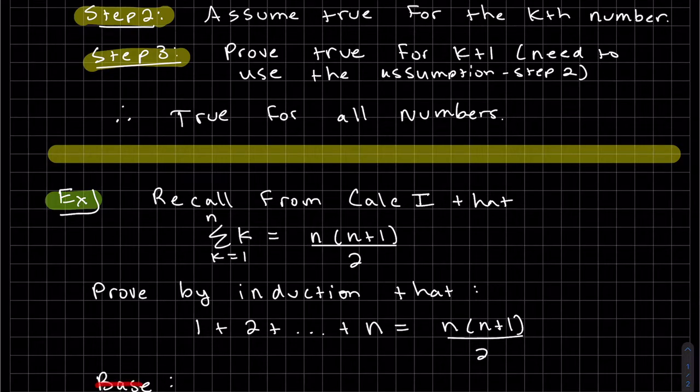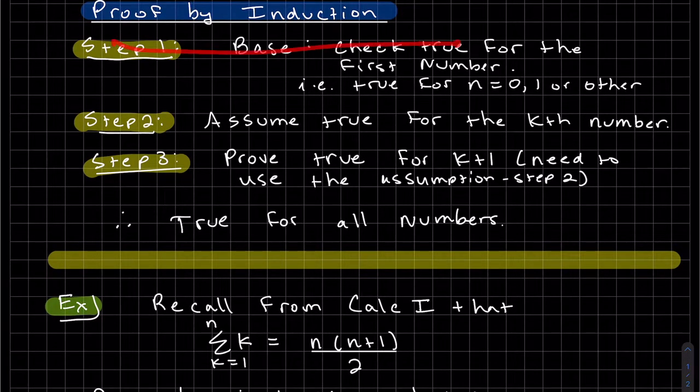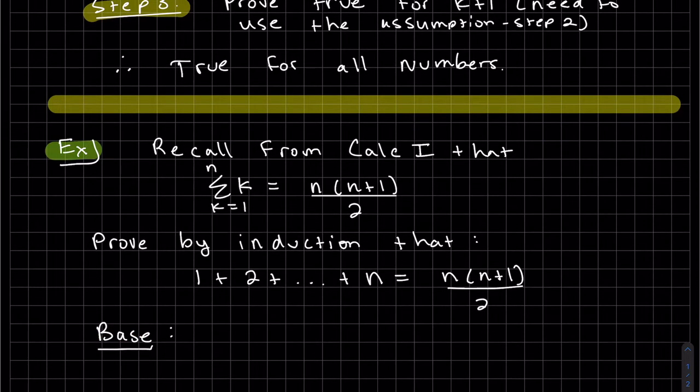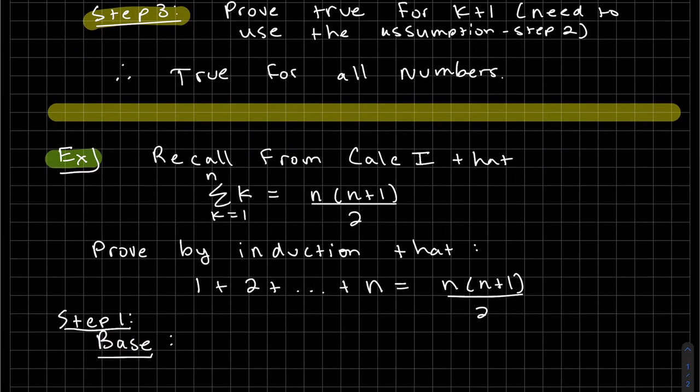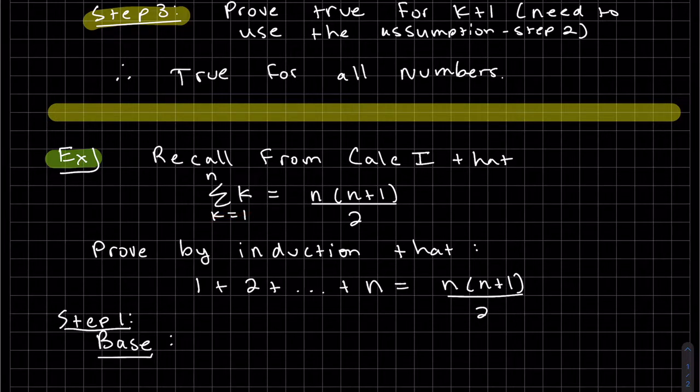So our first step, or step 1, is our base. Let's write that. And our base is our first one, k equals 1. So we can use summation notation or not. So we're showing it's true for n equals 1. So instead of an n at the top, we put 1, n equals 1 of k. And we want to know if that's equal to, instead of n, we're using n equals 1.